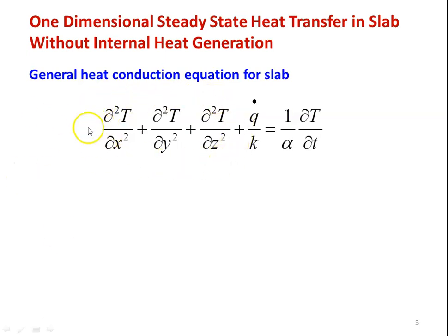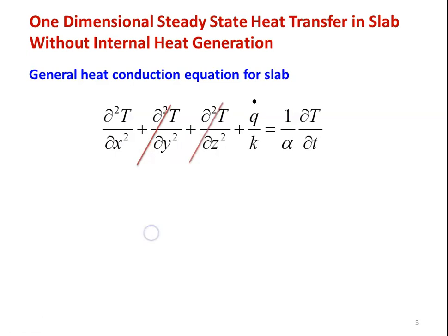The first three terms represent the three-dimensional situation, ∂T/∂t represents the unsteady state condition, and q̇ represents the internal heat generation. For one-dimensional steady state heat transfer in a slab without heat generation: we drop ∂²T/∂y² and ∂²T/∂z² (set to zero), q̇/k equals zero (no heat generation), and ∂T/∂t equals zero (steady state, no change in temperature with respect to time).